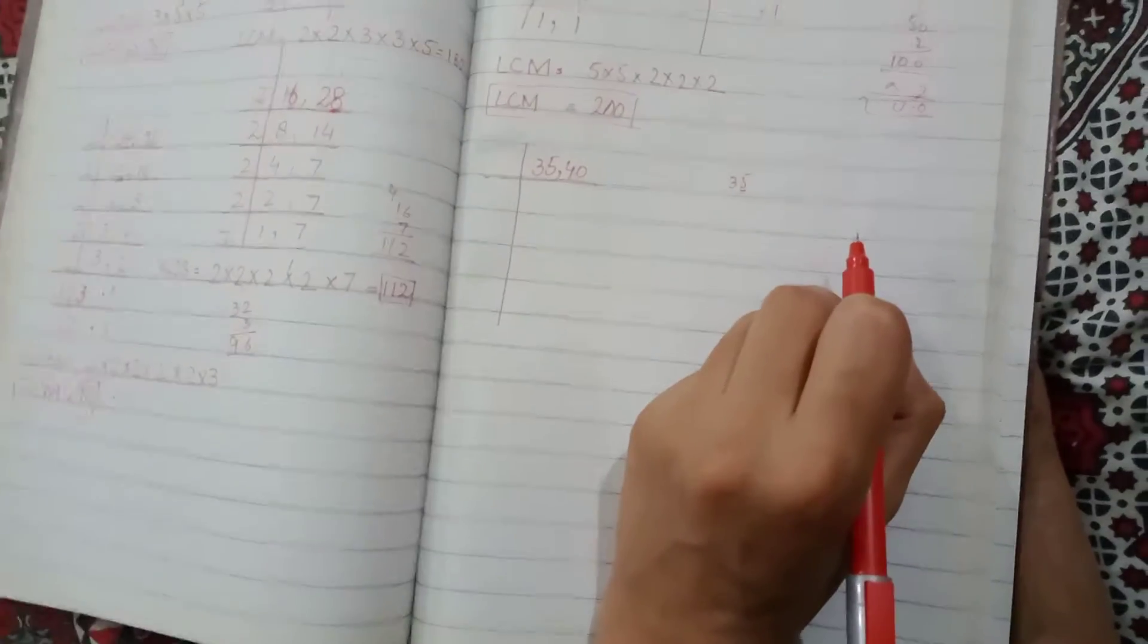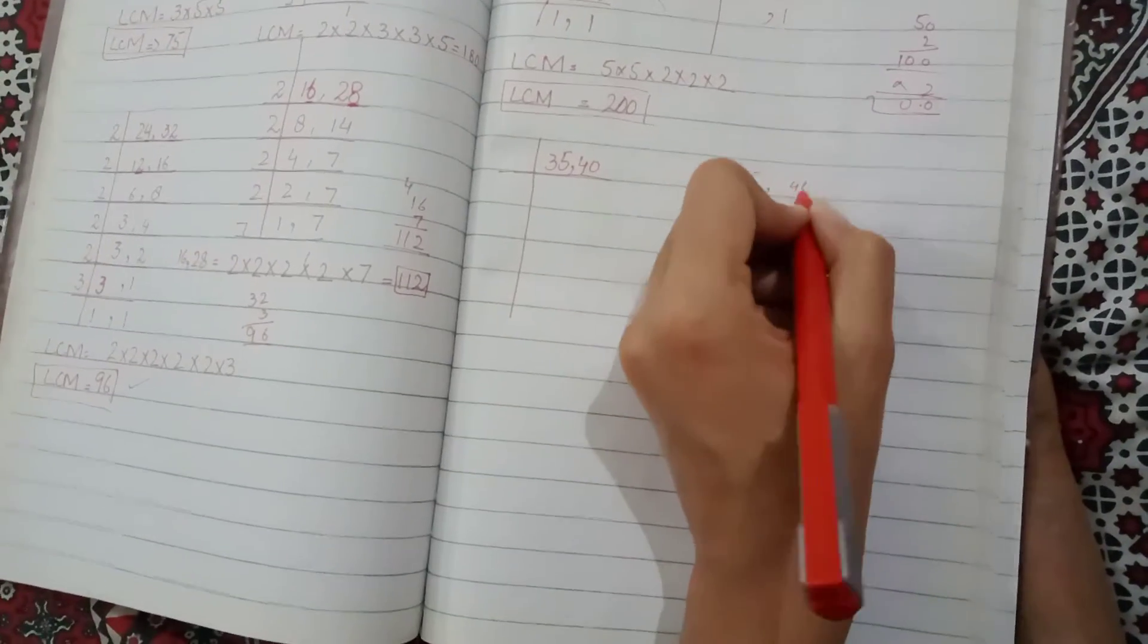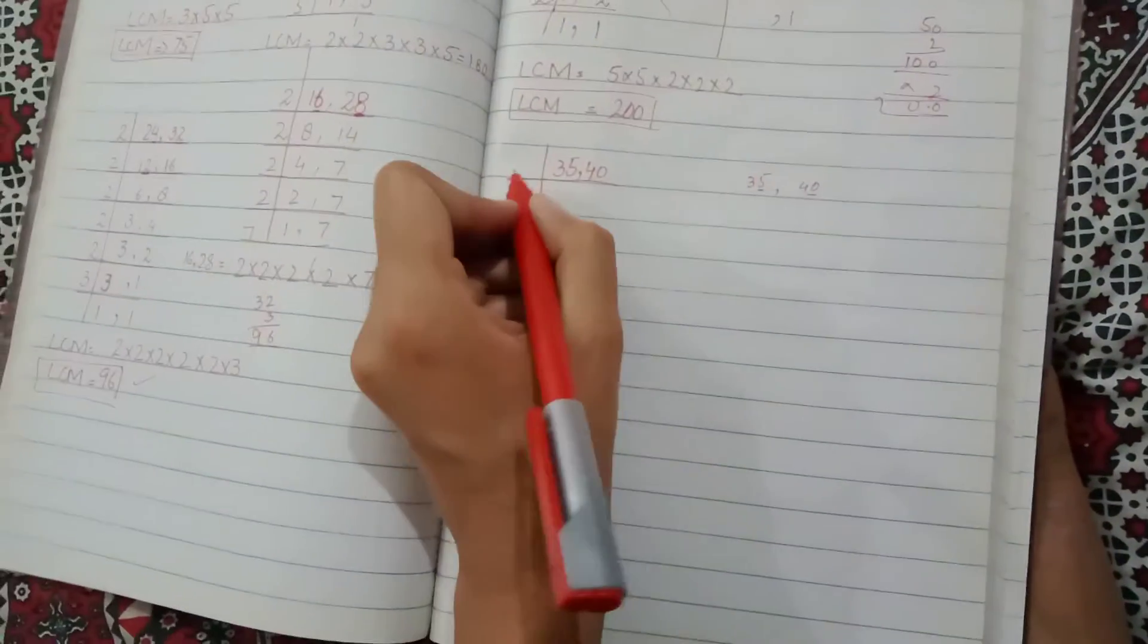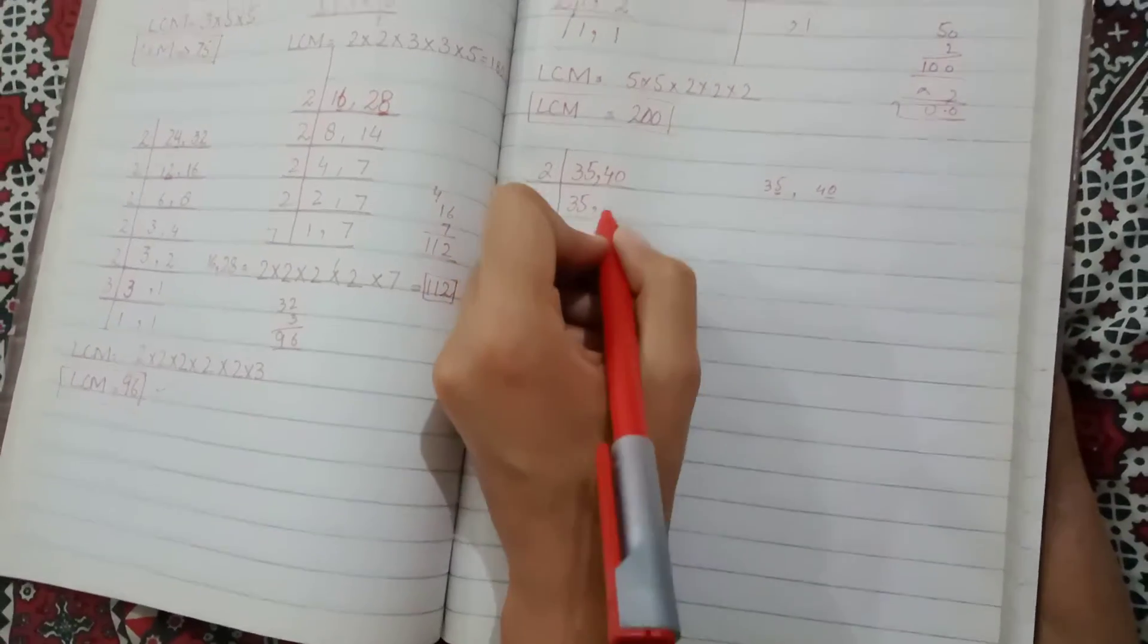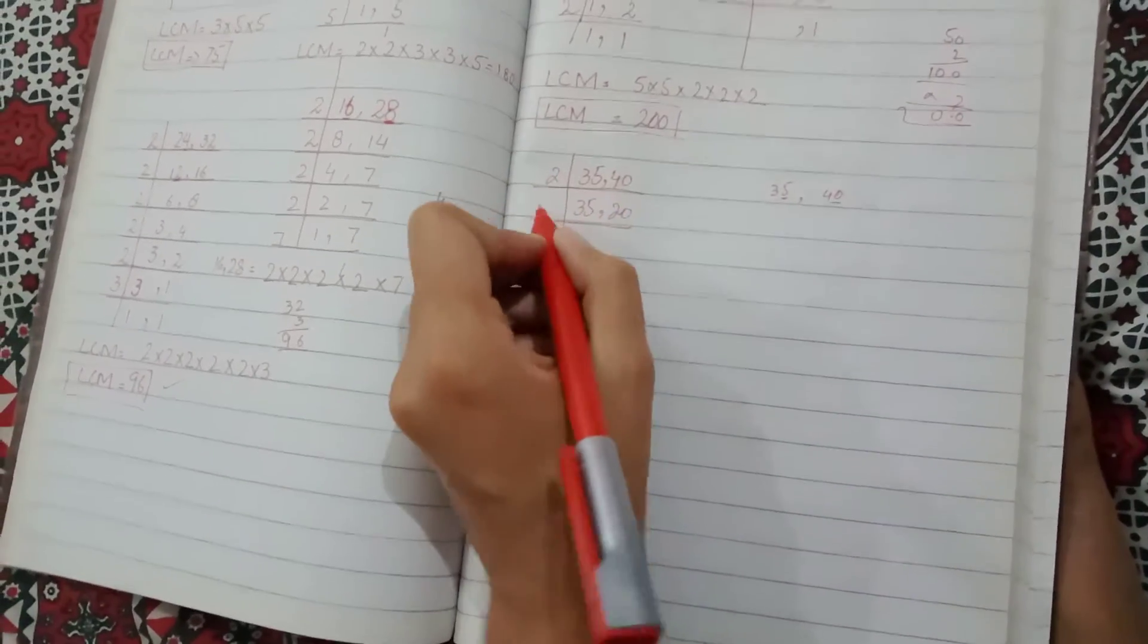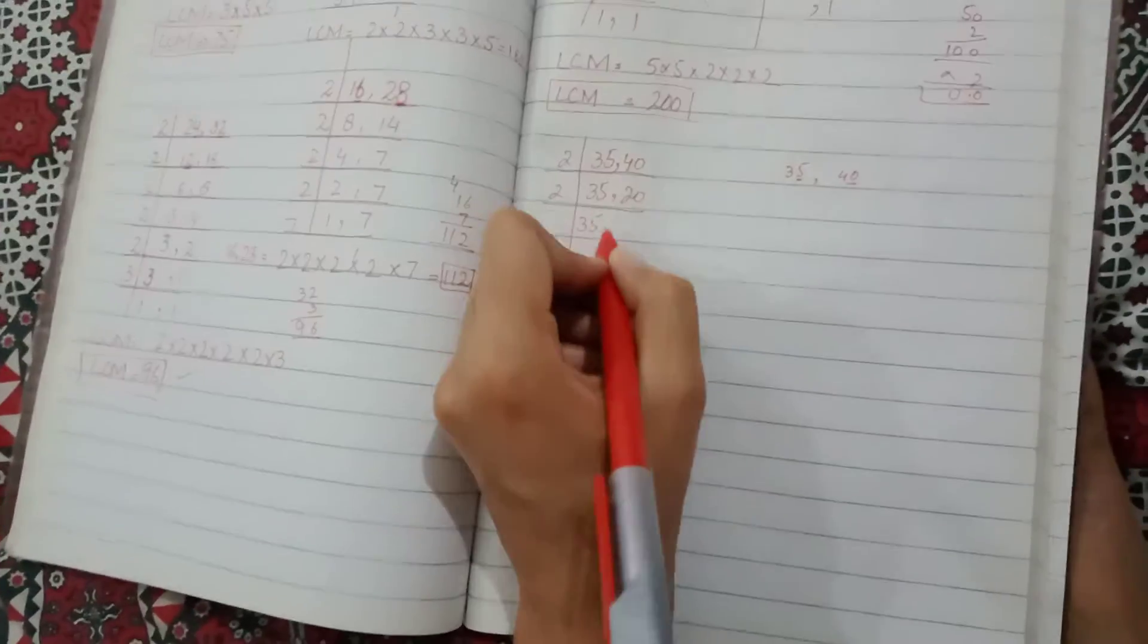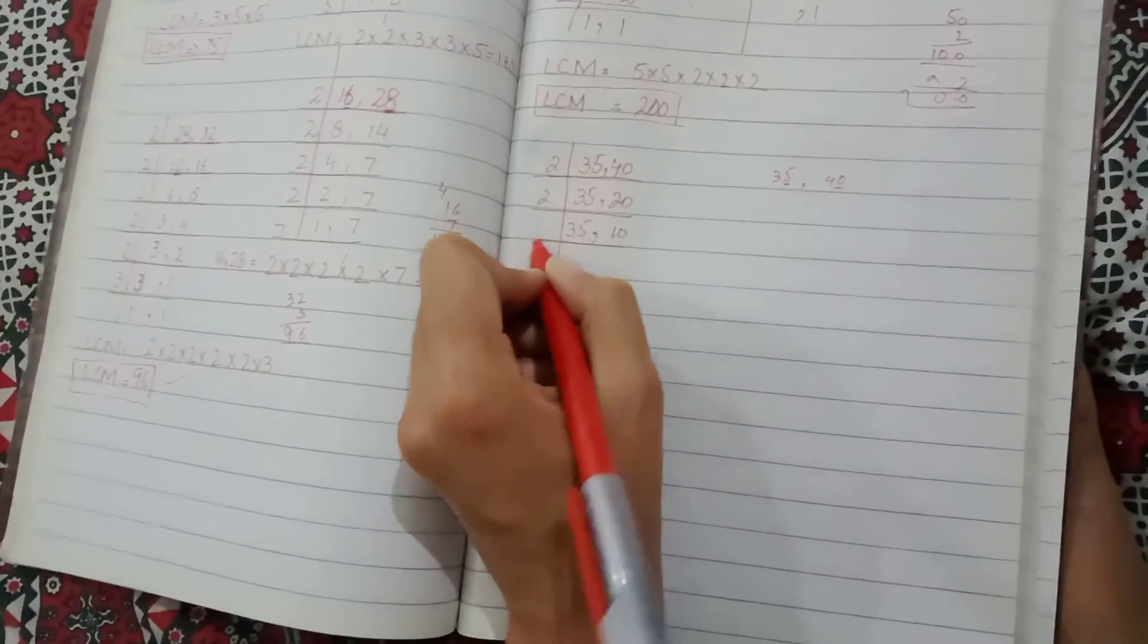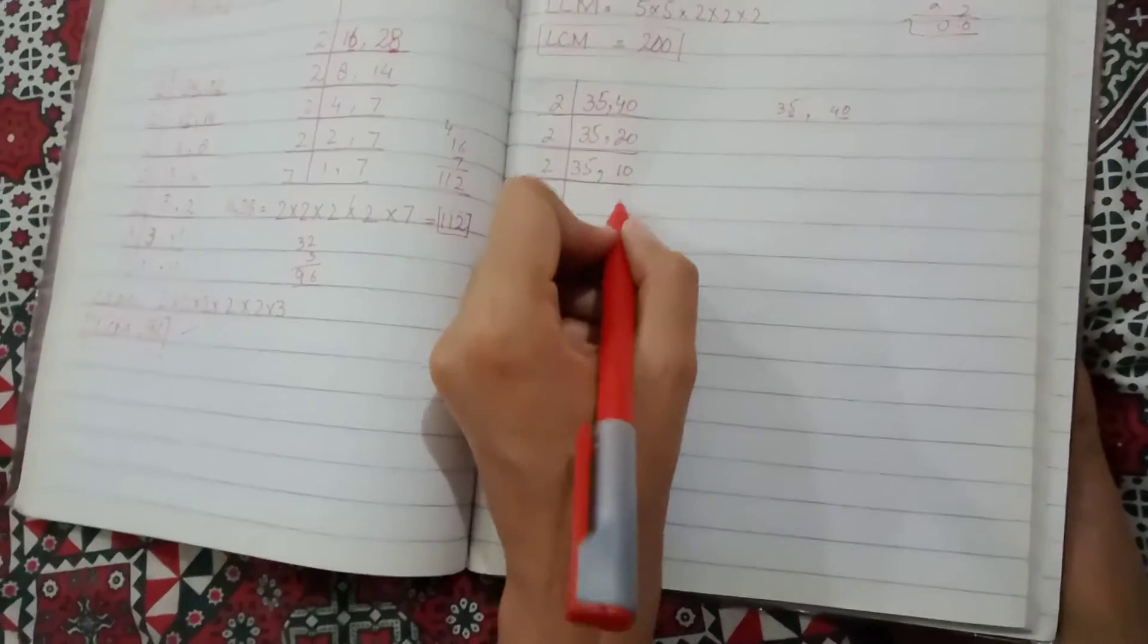40 is divisible by 2. So now what do we do? We will work with this. Now we will divide: 2 into 40 is 20, and 2 into 20 is 10.